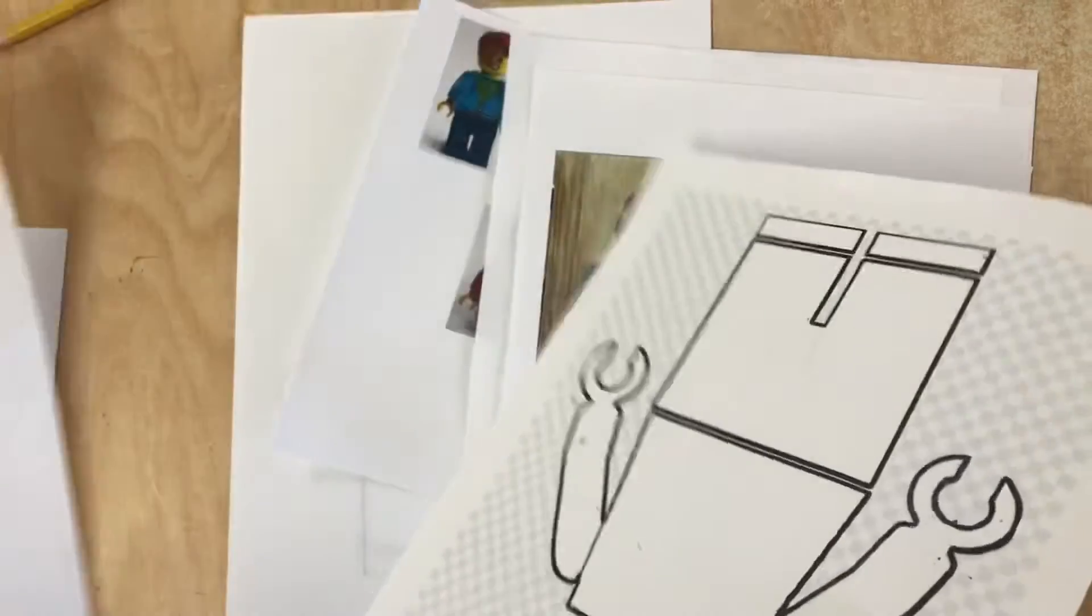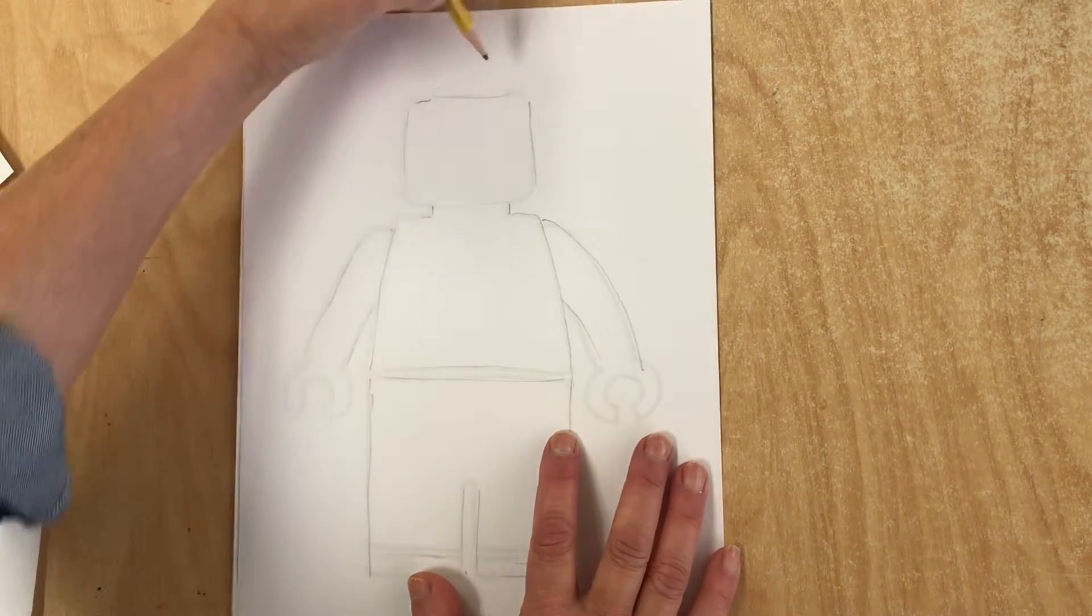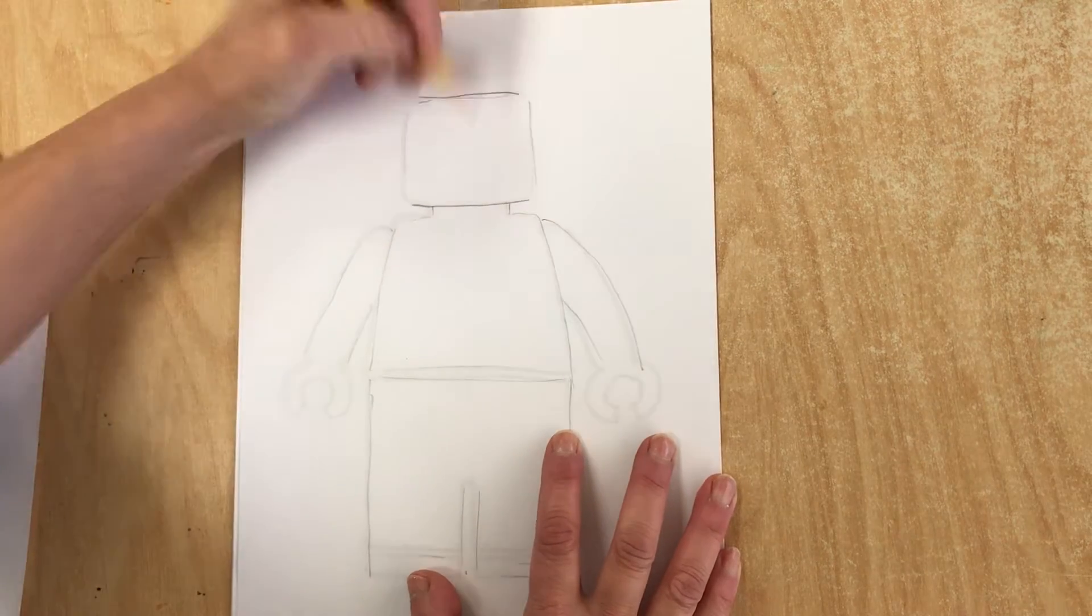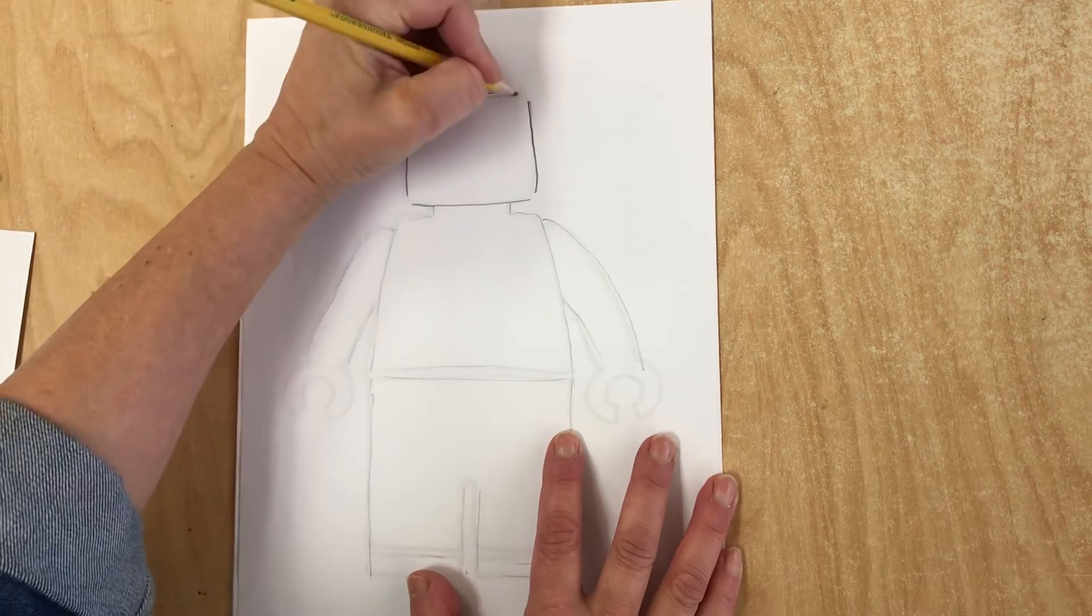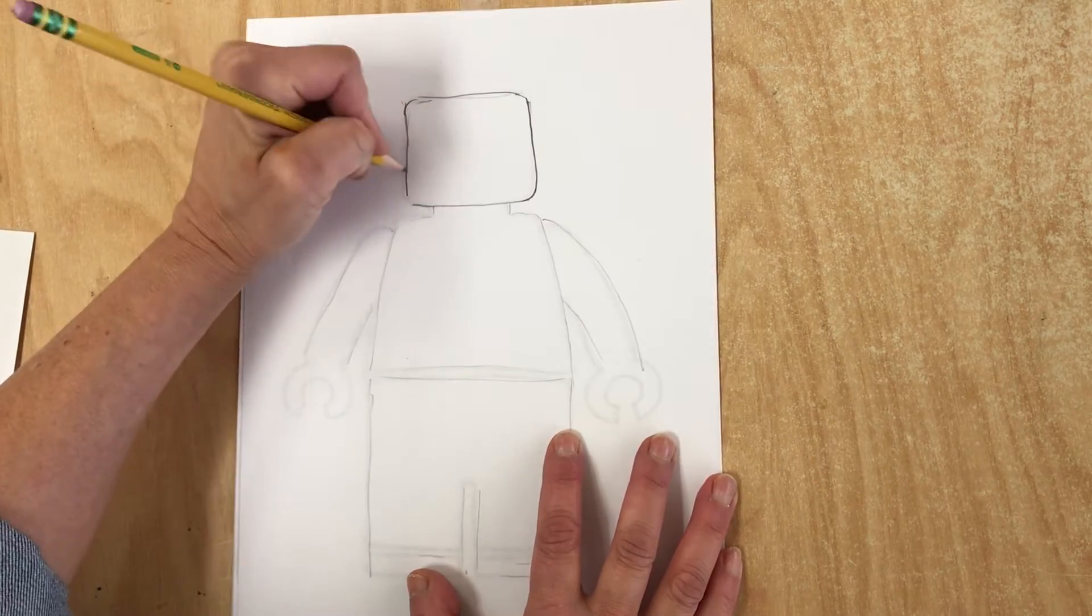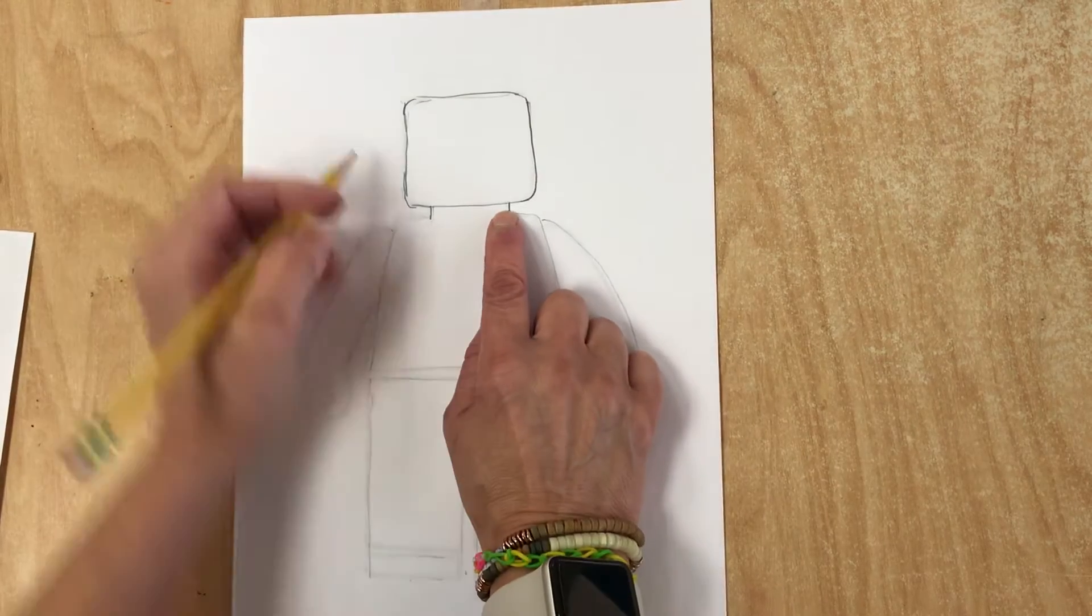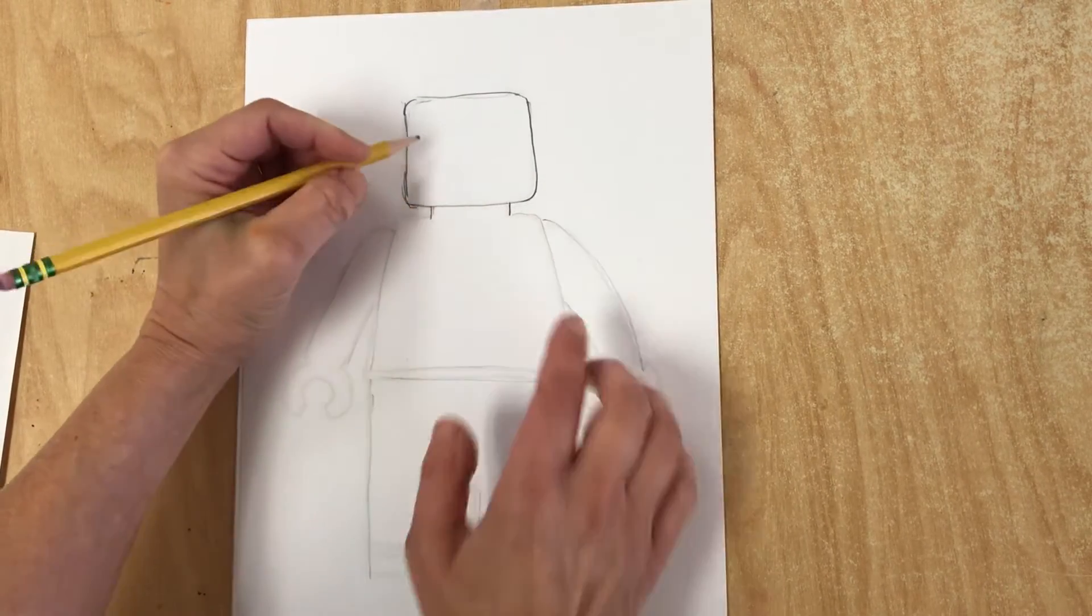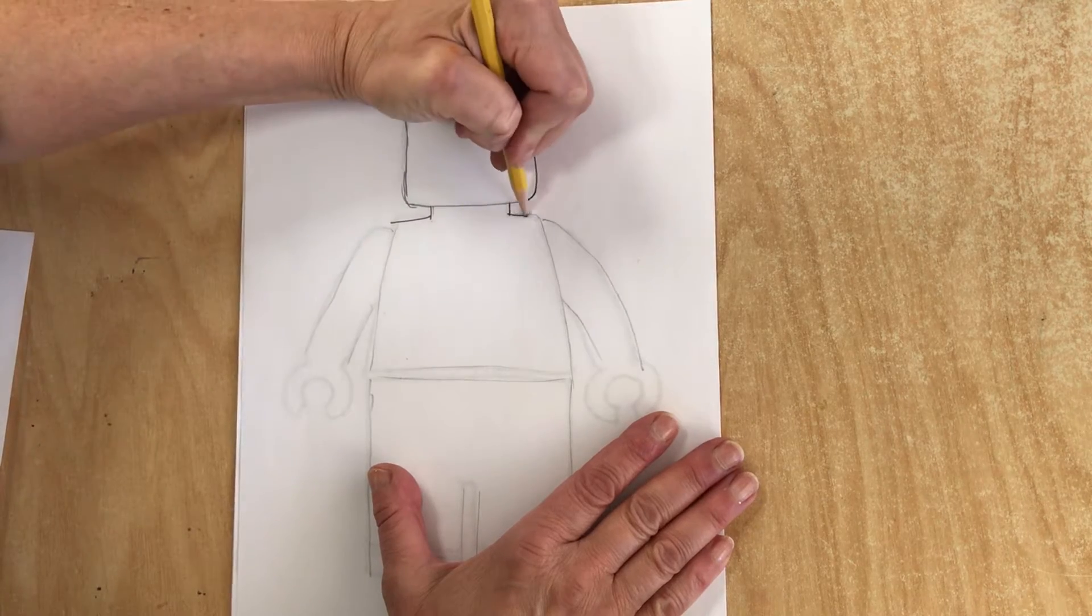So how do we draw these Legos? Well, you can just start with a square, but the corners are curved. Two lines for the neck, not all the way out but not too skinny.